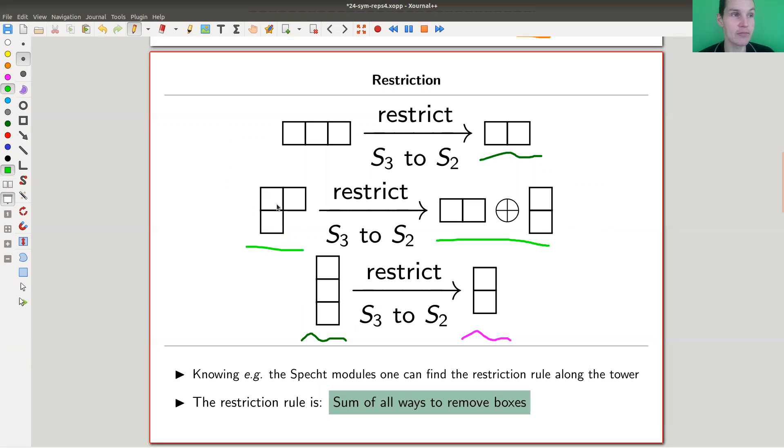This suggests a nice rule which is actually true in general: the restriction rule is really simple. You look at your diagram and you look at all the ways to remove boxes such that you still get a legal diagram. Here I have two ways to remove boxes such that I still get a legal diagram, and I get all of these as summands. Here's just one way, and here's also just one. That's the rule—that's the restriction rule. It's really simple, a nice beautiful restriction rule for the simple representations of the symmetric groups.